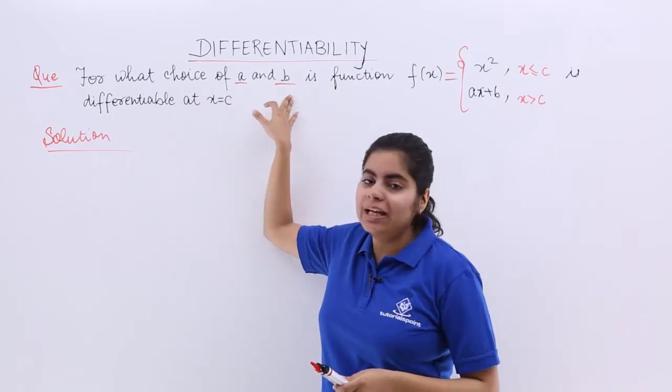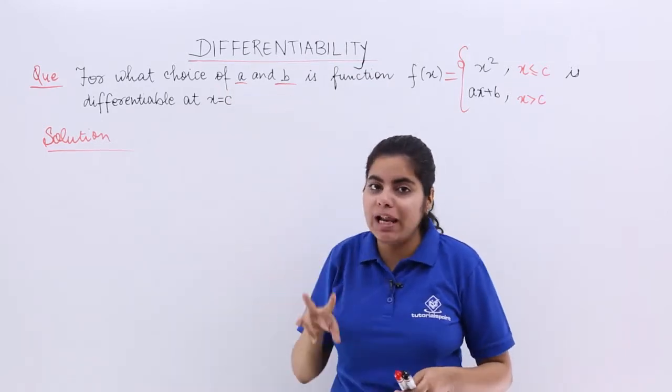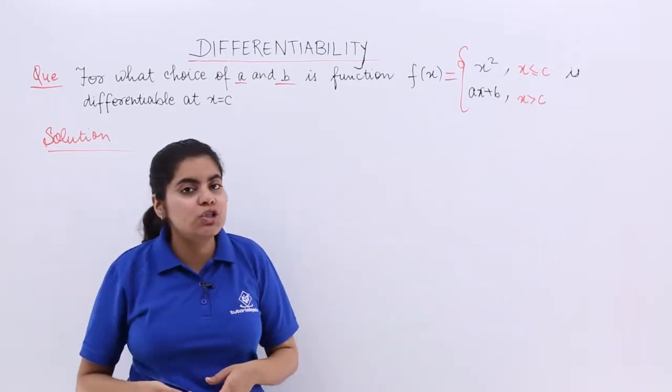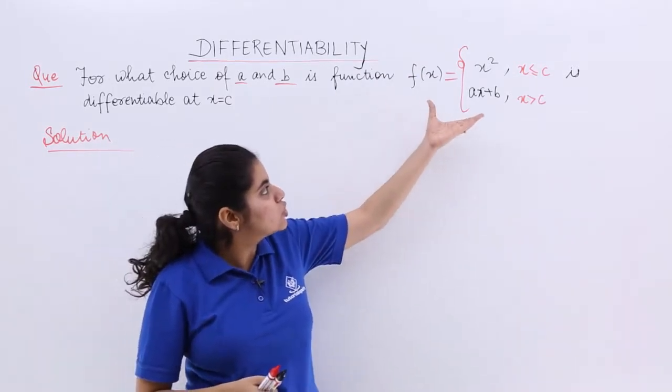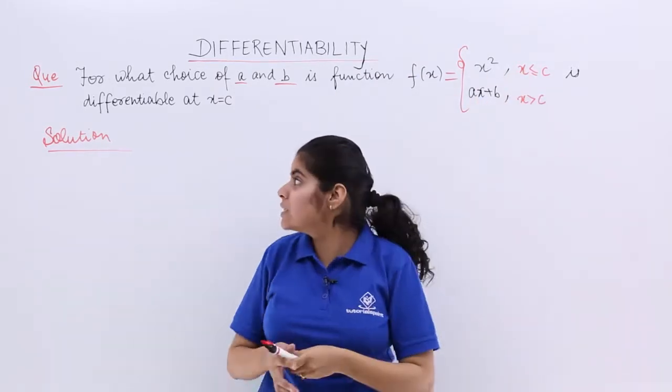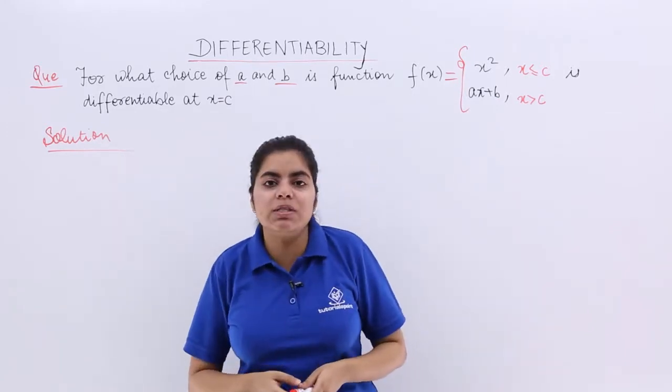For what choice of A and B? A and B values are needed, so I have already underlined them. For what choice of values of A and B, the function split into two halves is differentiable at x is equal to c.